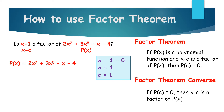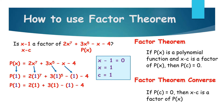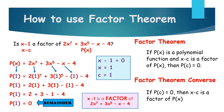We replace x with 1 in our polynomial. So p of 1 is equal to 2 times 1 raised to 7 plus 3 times 1 raised to 5 minus 1 minus 4. Evaluating the exponents first gives 2 times 1 plus 3 times 1 minus 1 minus 4. Performing the multiplications: 2 plus 3 minus 1 minus 4. So 2 plus 3 is 5, minus 1 is 4, minus 4 is 0. Since p of 1 equals 0, x minus 1 is a factor of 2x raised to 7 plus 3x raised to 5 minus x minus 4.